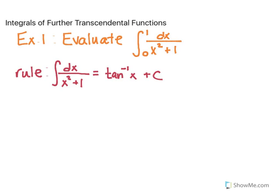Let's say you couldn't recognize this rule immediately. You might rewrite this as the definite integral from 0 to 1 of 1 over x squared plus 1 dx — this is the same exact thing as what we started with. When you look at it that way, there's still no basic rule that helps. There's 1 over x that would equal logarithms, but this isn't quite like that — this is an entire argument in the denominator.